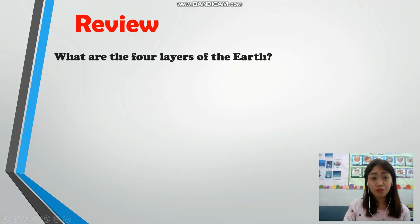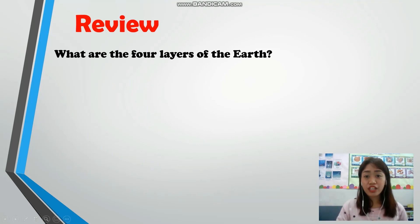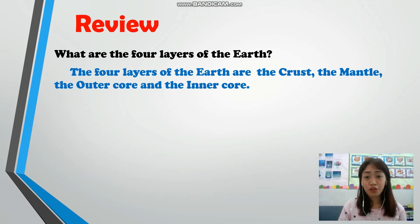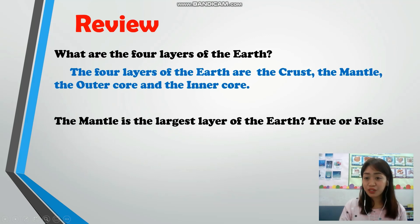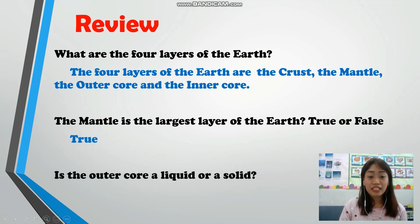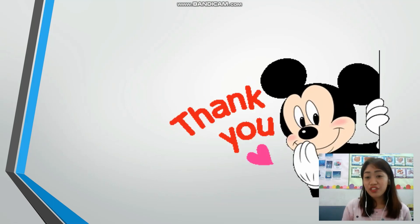Now let's review. What are the four layers of the earth? The four layers of the earth are the crust, the mantle, the outer core, and the inner core. The mantle is the largest layer of the earth — true. Is the outer core a liquid or a solid? Liquid. Thank you everyone for watching. Hope you understand our lesson for today and see you again in our next video. Bye!